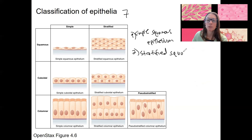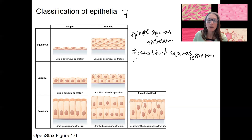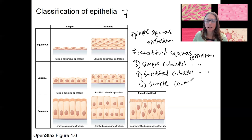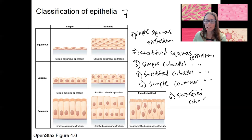Stratified squamous epithelium is going to be more protective because there are more layers. Then we have simple cuboidal epithelium and stratified cuboidal — a little more rare, but it does exist. Simple columnar will be found in our intestines, and then stratified columnar — like stratified cuboidal, a little more rare — it's going to be in glands.